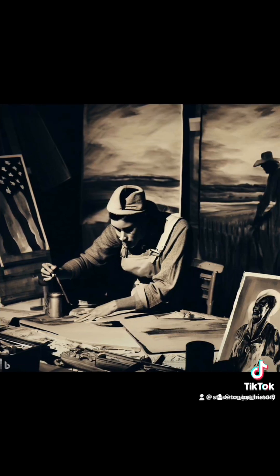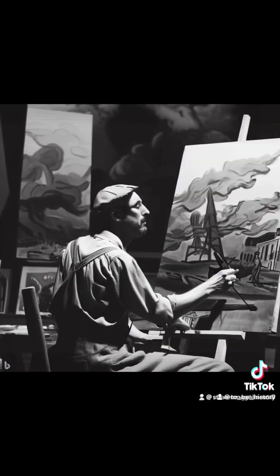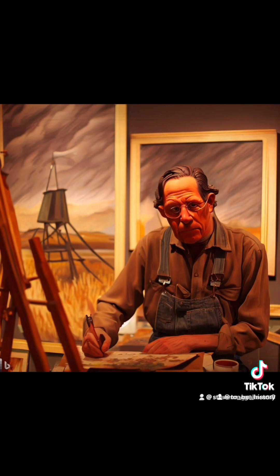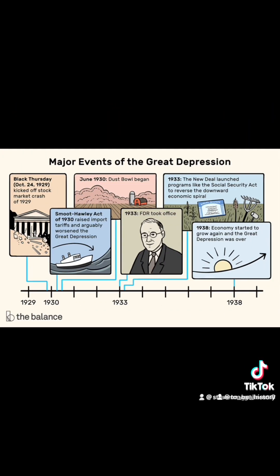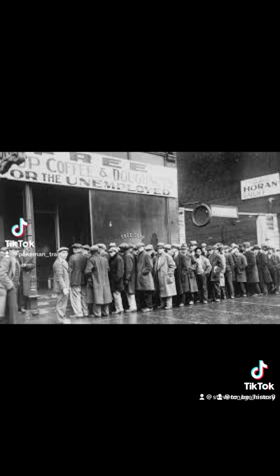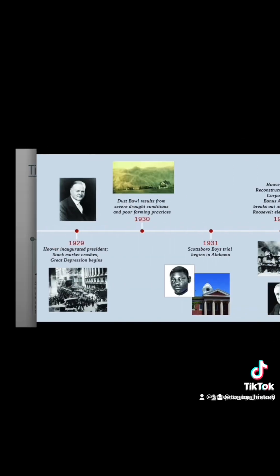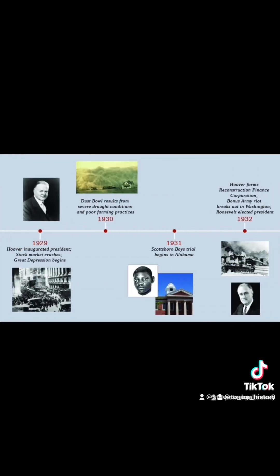Secondly, agricultural overproduction and falling prices in the United States, coupled with a decade-long drought known as the Dust Bowl, devastated farmers and rural communities. The collapse of the farming industry exacerbated the economic crisis as farmers faced foreclosure, bankruptcy, and unemployment.